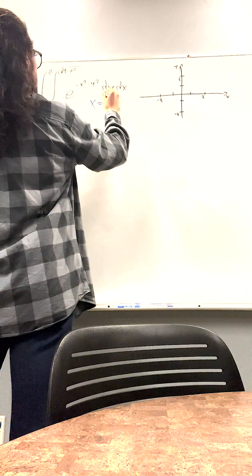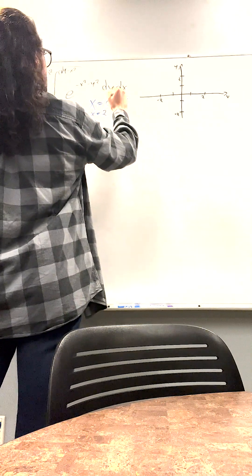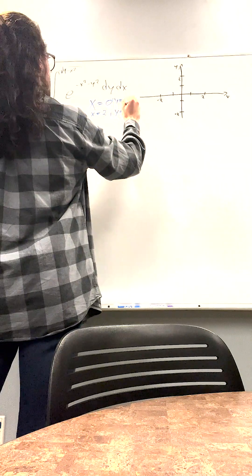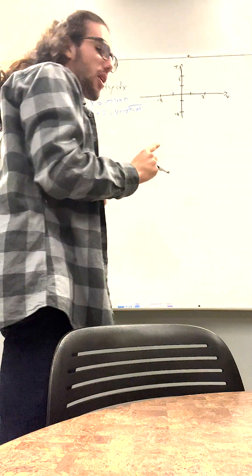x is equal to 0, x is equal to 2, y is equal to 0, y is equal to square root of 4 minus x squared. So we start by graphing. Always graph these problems.